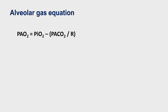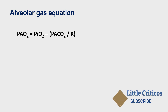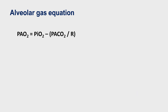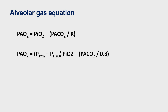The partial pressure of alveolar oxygen is the difference between the partial pressure of inspired oxygen minus alveolar carbon dioxide divided by R. R denotes the respiratory quotient, which is roughly 0.8. The respiratory quotient is the amount of oxygen and carbon dioxide exchanged during a respiratory cycle. The partial pressure of inspired oxygen is the difference between the atmospheric pressure and the water vapor pressure, times the fraction of inspired oxygen concentration.